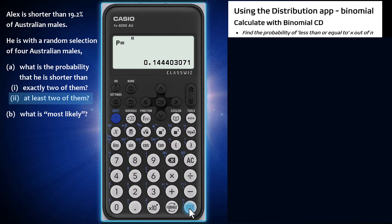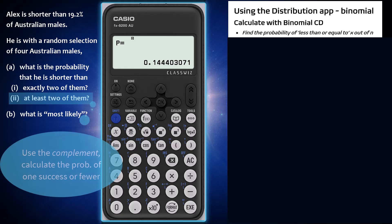The next calculation is the probability of at least two successes in four trials, if the probability of success in a single trial is equal to 0.192. To calculate this most efficiently, the cumulative probability of less than or equal to one success can be calculated, as the complement of this result is the probability required.